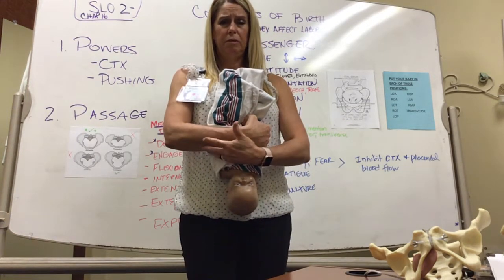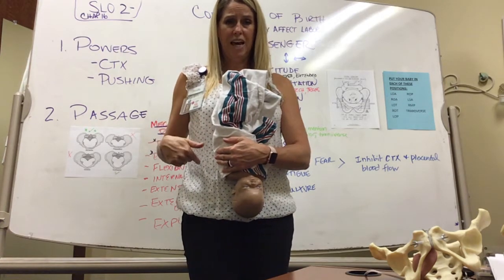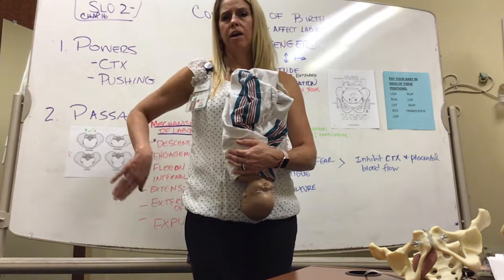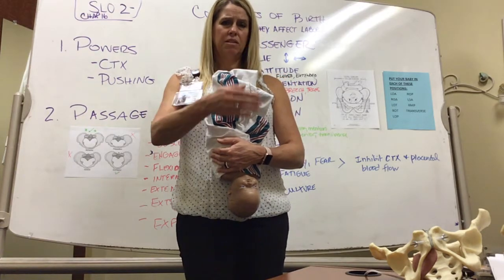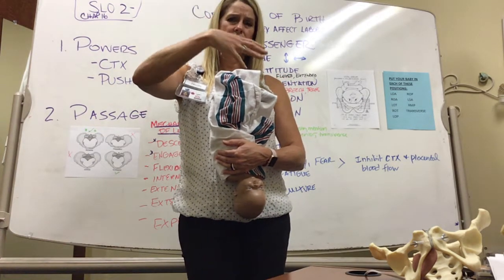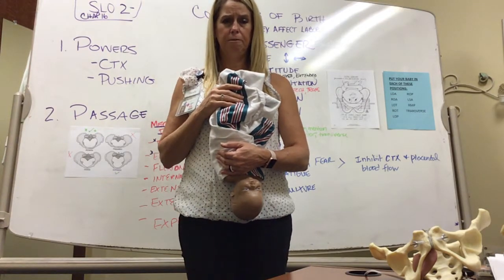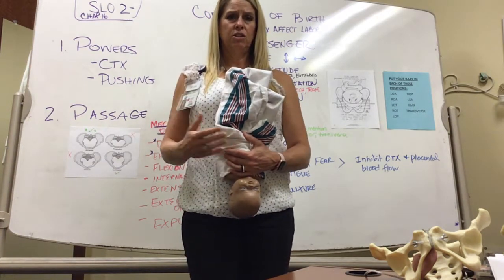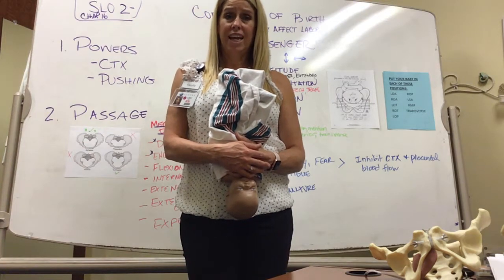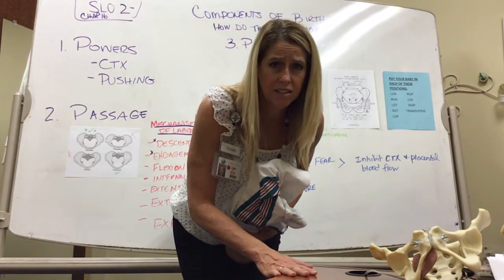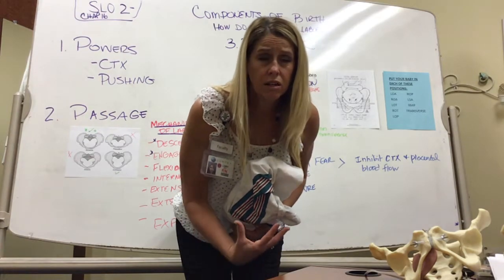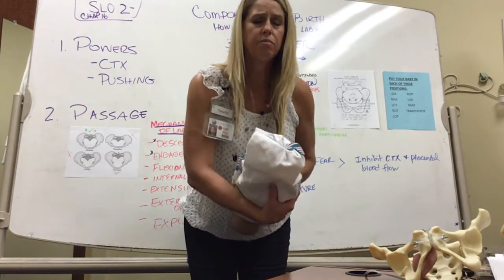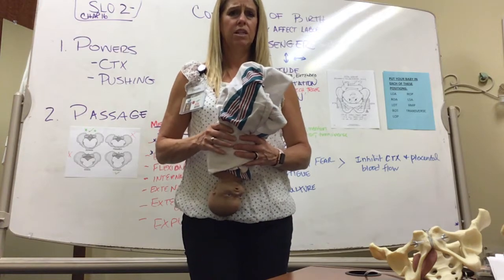Posterior babies — occiput posterior, facing toward mom's back — cause a lot of back labor, because the back of the head is aligned with mom's spine. Contractions are also less efficient at squeezing around the baby in that position. Our nursing intervention is to position the patient on hands and knees, or bending over a desk or table, so that gravity helps turn the baby into a more anterior position, making delivery a little easier.